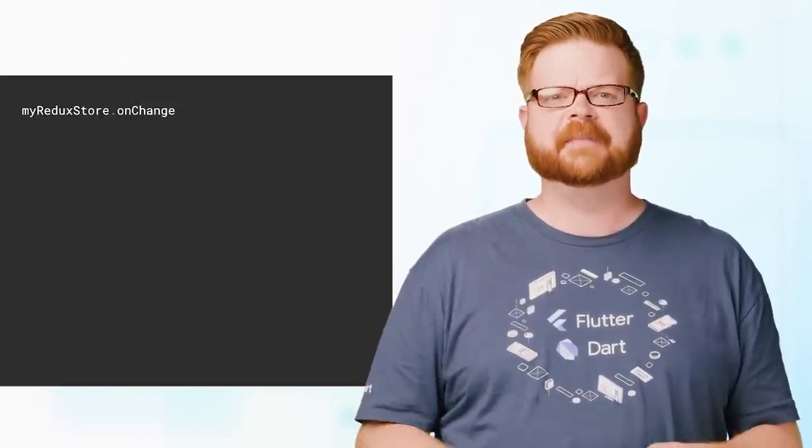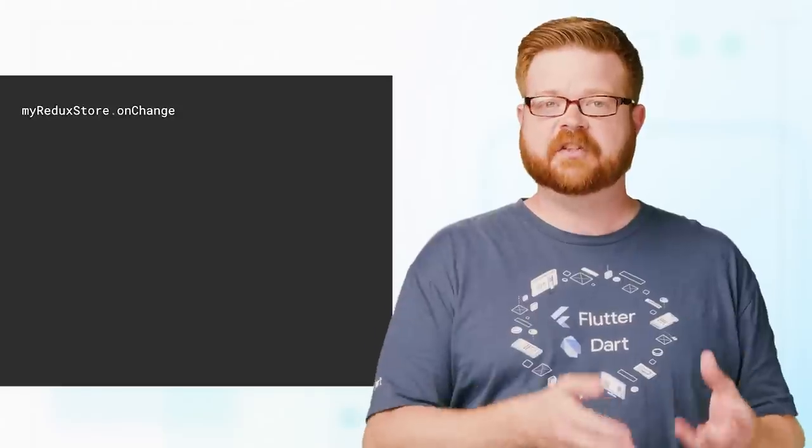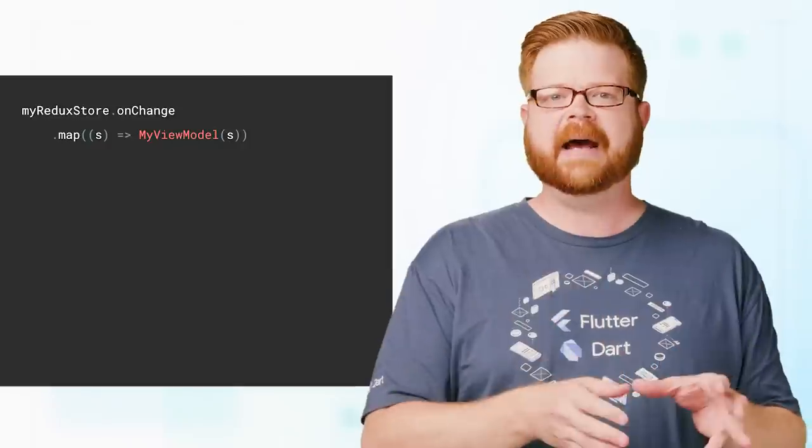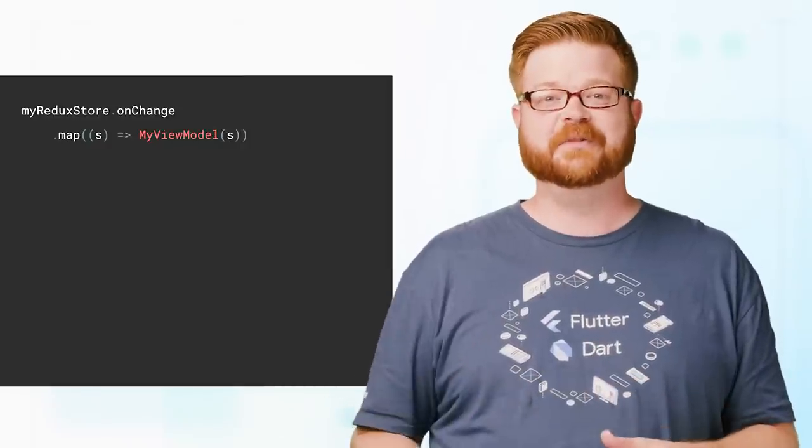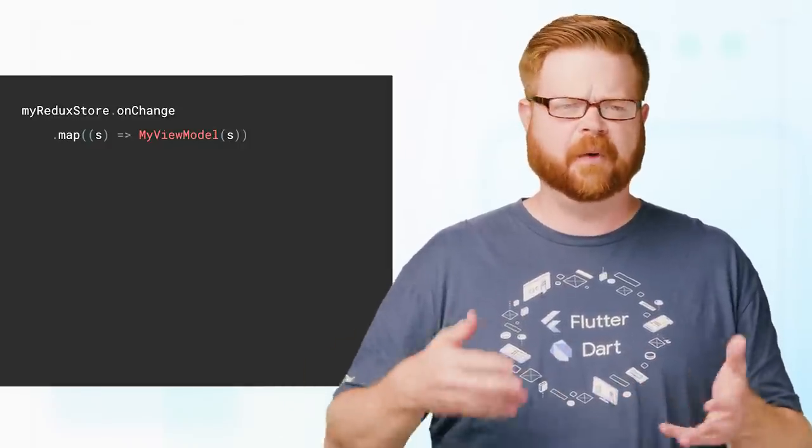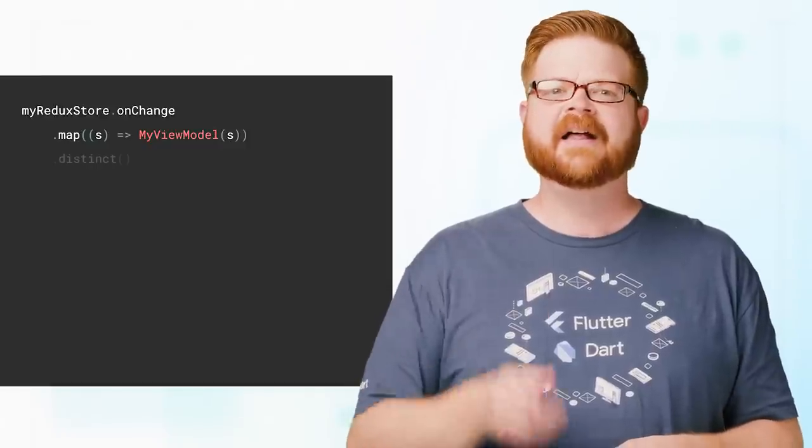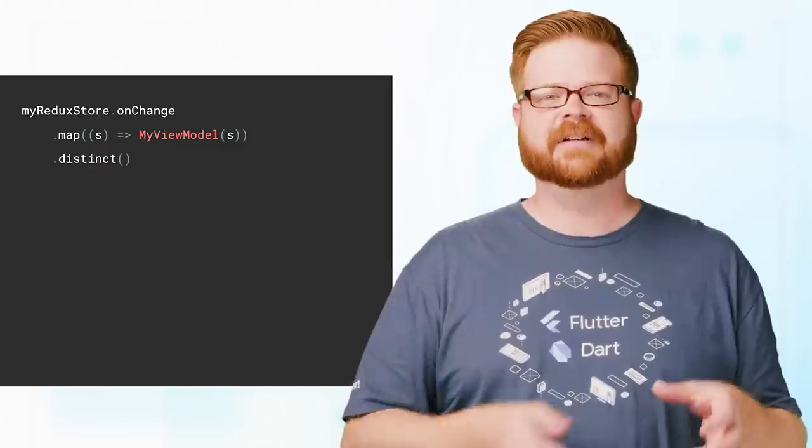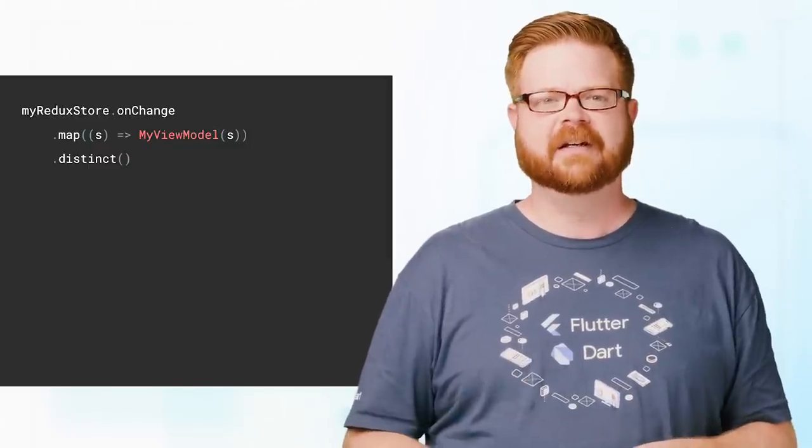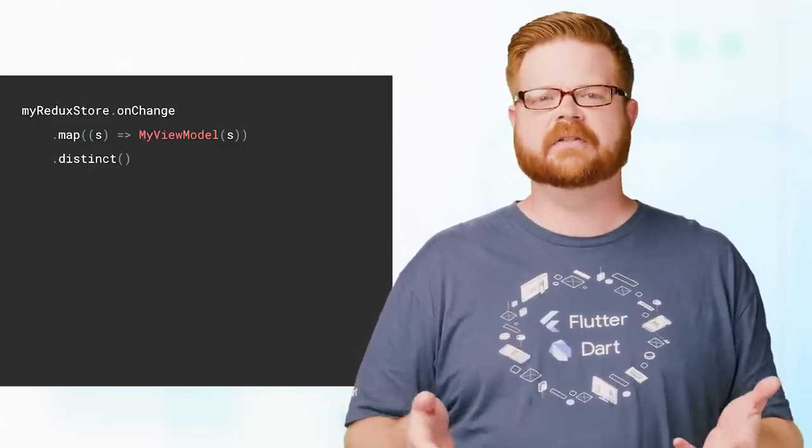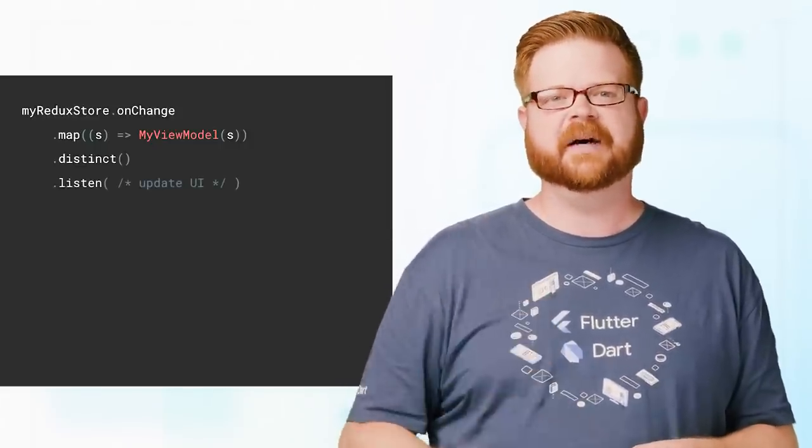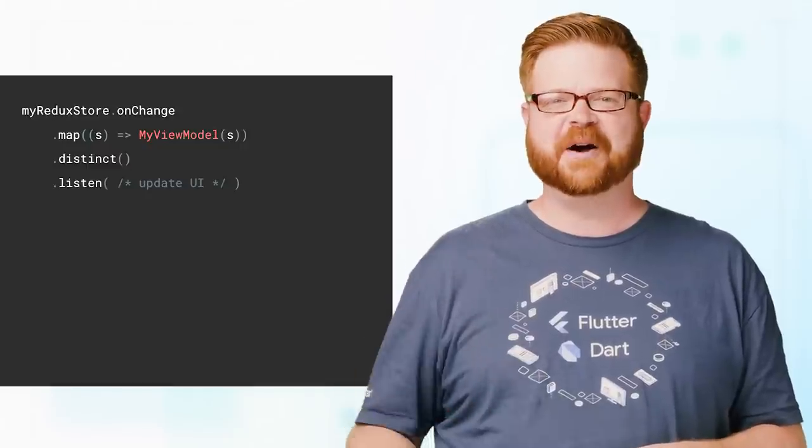Distinct is another good one. If I have an app that uses a Redux store, that store emits new app state objects in an onChange stream. I can use map to convert that stream of state objects to a stream of view models for one particular part of my app. Then I can use the distinct method to get a stream that filters out consecutive identical values, in case the store kicks out a change that doesn't affect the subset of data in my view model. Then I can listen and update my UI whenever I get a new view model.